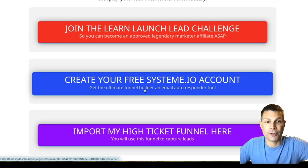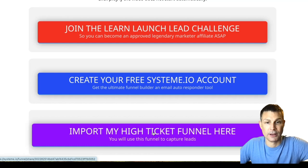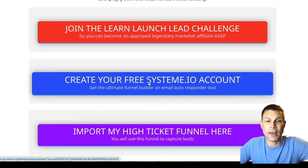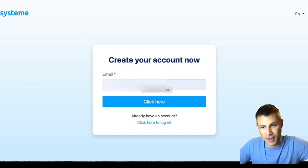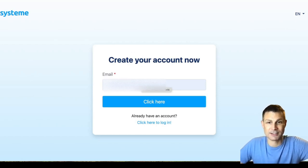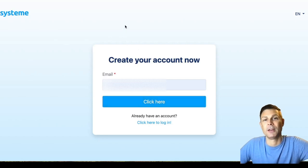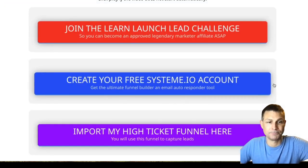Step number two: you're going to create your free System.io account. For those of you who already have an account, you can skip to step number three. If you don't have a System.io account yet, click on this button here — your email address should populate automatically into the box — then click and get your free account.